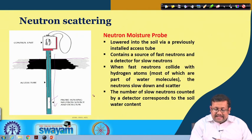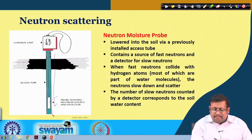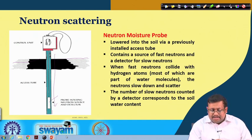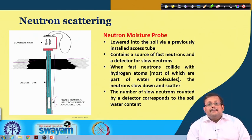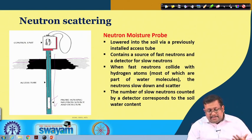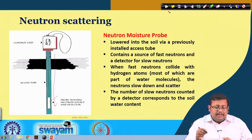These hydrogen atoms come from nearby water molecules. Once the neutrons collide with the hydrogen atoms of the water molecules, the neutrons slow down and scatter — we call these thermalized neutrons. The number of slow or thermalized neutrons counted by a detector (also present in the probe) corresponds to the soil water content. This is the working principle of the neutron moisture probe.